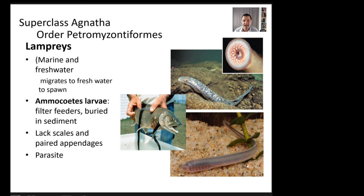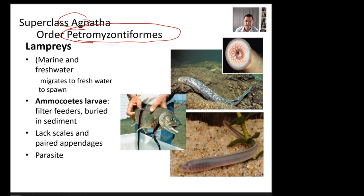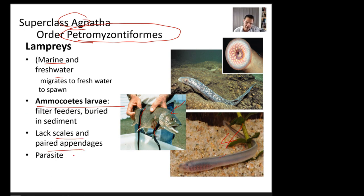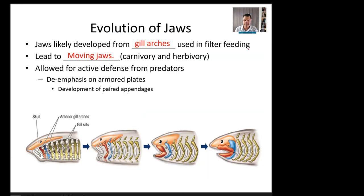Also in superclass Agnatha is order Petromyzontiformes — the lampreys. What's shown in the image is actually a fish with lampreys parasitizing it. Lampreys are marine and freshwater and migrate between environments. They have a larval stage called the ammocoetes larva, a filter feeder that looks somewhat like a lancelet. Lampreys lack scales and paired appendages, have no chewing jaws, and are parasites that attach to fish and rasp into their sides.